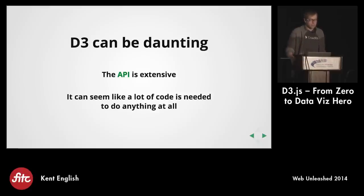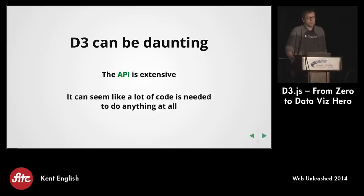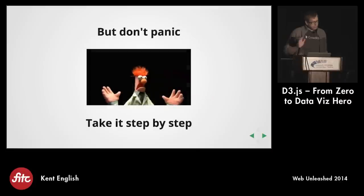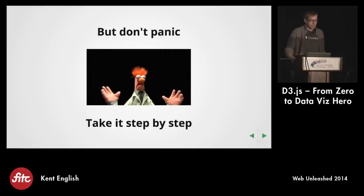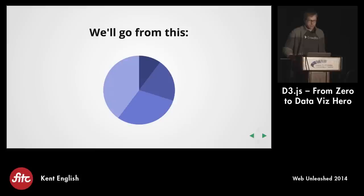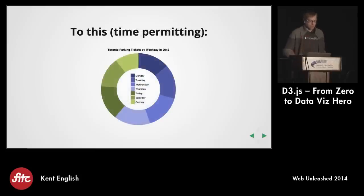The API is very extensive, and when you first start looking at examples, you might think, holy crap, that's a lot of code needed to do anything at all, but don't panic. We're going to take it step by step. We're going to start out with a very basic pie chart, and we're going to add layers onto it until we have something that has tooltips and filtering, and it animates when I filter it.